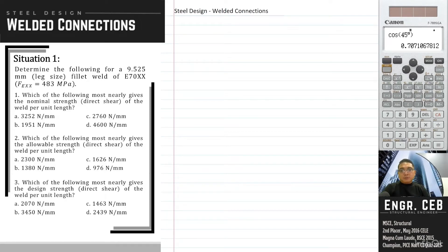Let us solve these problems about welded connections. Determine the following for a 9.525 mm fillet weld of E70XX: which of the following most nearly gives the nominal strength of the weld per unit length?